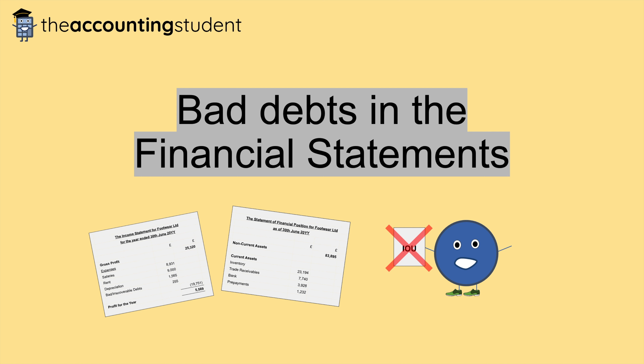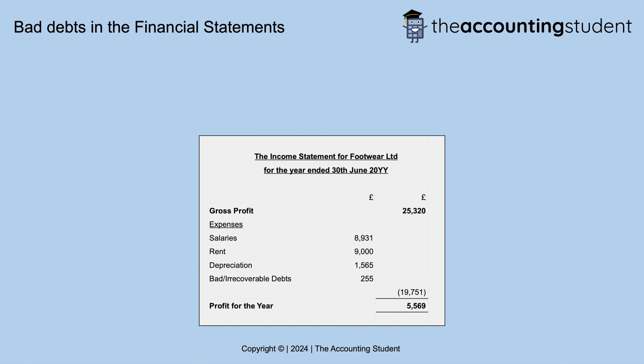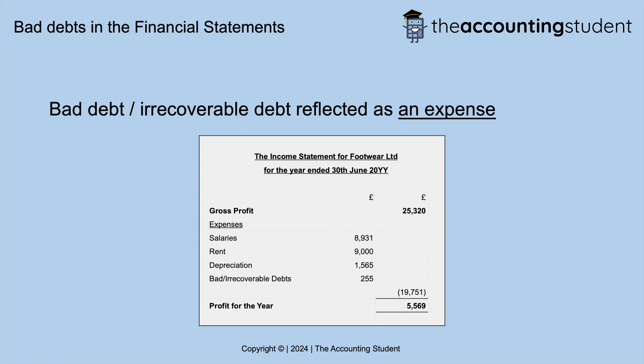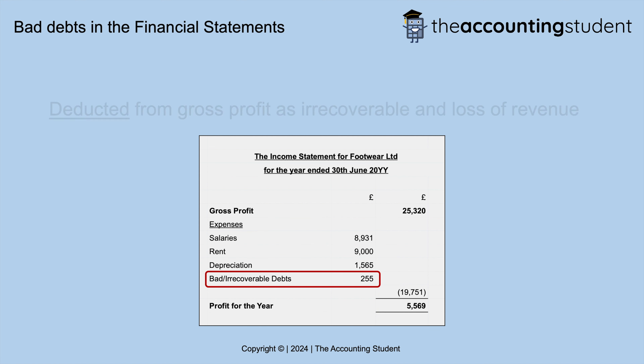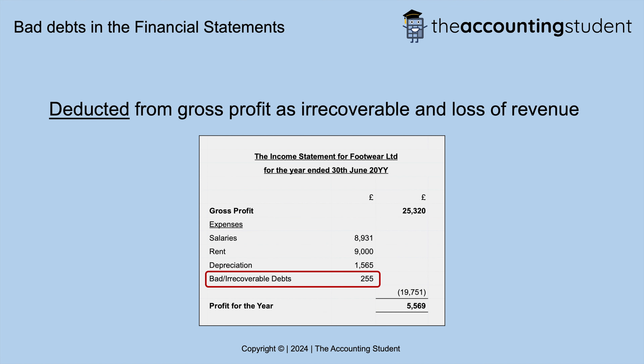Hello and welcome to the video where we look at bad debts or irrecoverable debts in the financial statements. First of all, we will look at how bad debts or irrecoverable debts are shown in the income statement, otherwise known as the profit and loss. The bad debt or irrecoverable debt will be reflected as an expense item. In this example, the £255 is deducted from the gross profit value as the debt is irrecoverable and a loss of revenue.